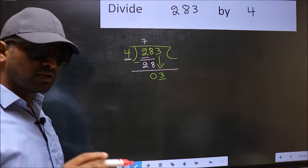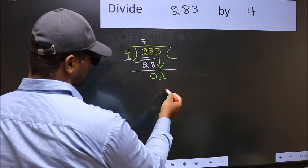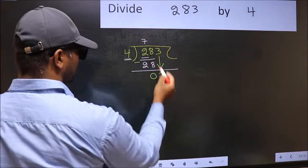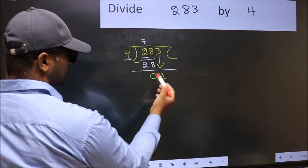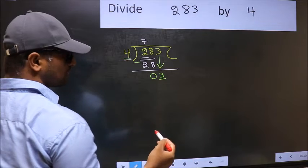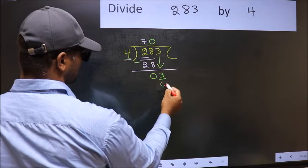Instead, what you should think of doing is, what number should we write here. If I take 1 here, I will get 4. But 4 is larger than 3, so what we should do is we should take 0. So, 4 into 0, 0.